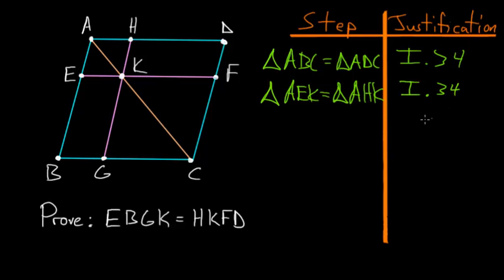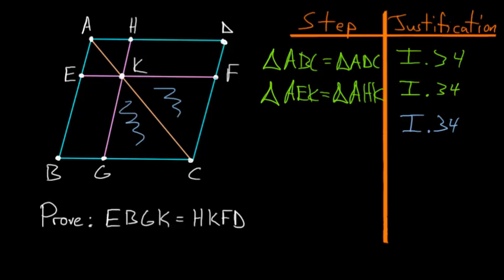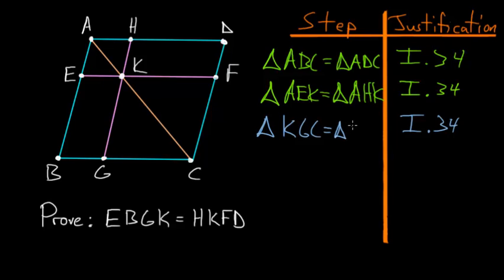We use the same argument a third time with Book 1, Proposition 34, now looking at parallelogram KFCG, which is bisected by line KC. So triangle KGC is equal to triangle KFC.